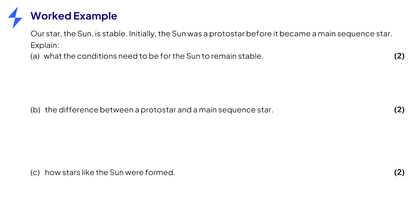Let's look at an example question. Our star, the sun, is stable. Initially, the sun was a protostar before it became a main sequence star. The command word is EXPLAIN for each part, meaning we need to write clearly, logically, and make coherent links within our answers. Each part is worth two marks.